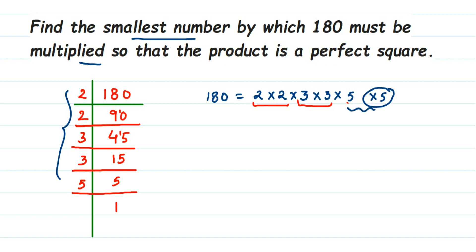When you're multiplying, we should multiply on both sides. That is, we have to multiply with 180 also. But in this question, they are not asking us to multiply and get the answer. We have to just find out the smallest number to be multiplied. So it's very simple. The number which is single, which is not in pair, that will be the number which has to be multiplied.